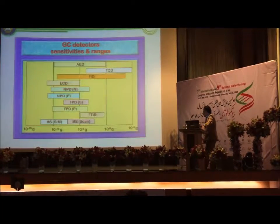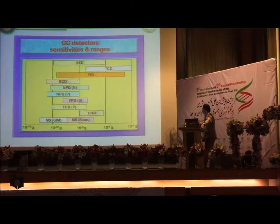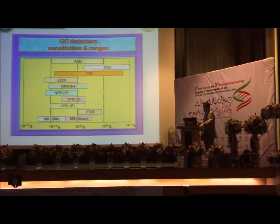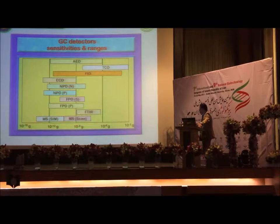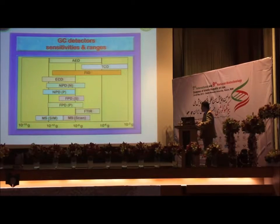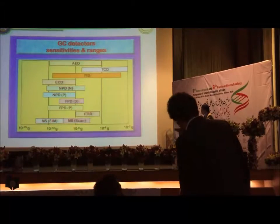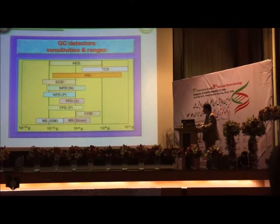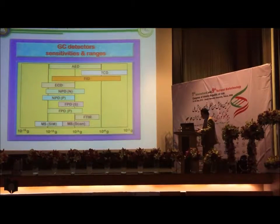The sensitivity of detectors in GC — there are many detectors, for example FID, flame ionization detection. GC-MS is another detector — mass spectrometry — and it has high sensitivity, capable of detecting down to one picogram.